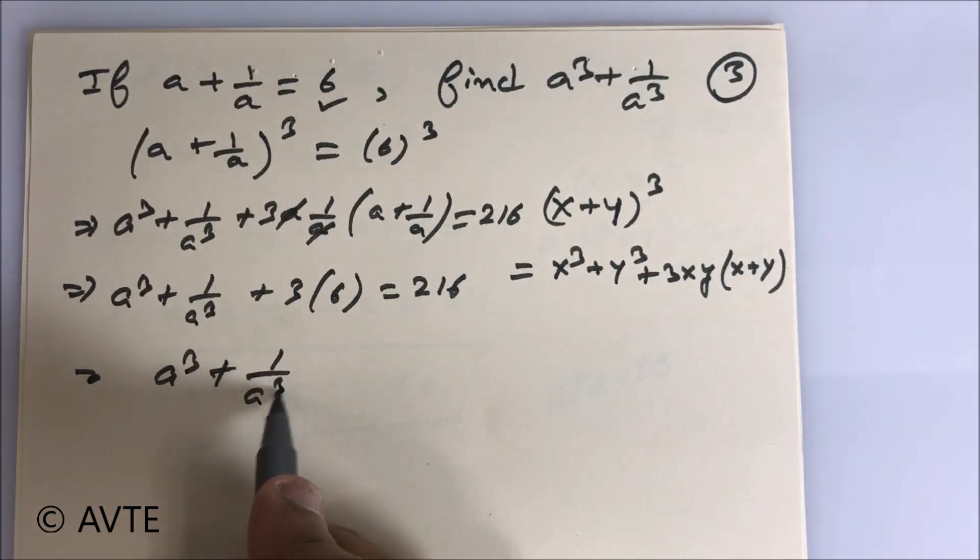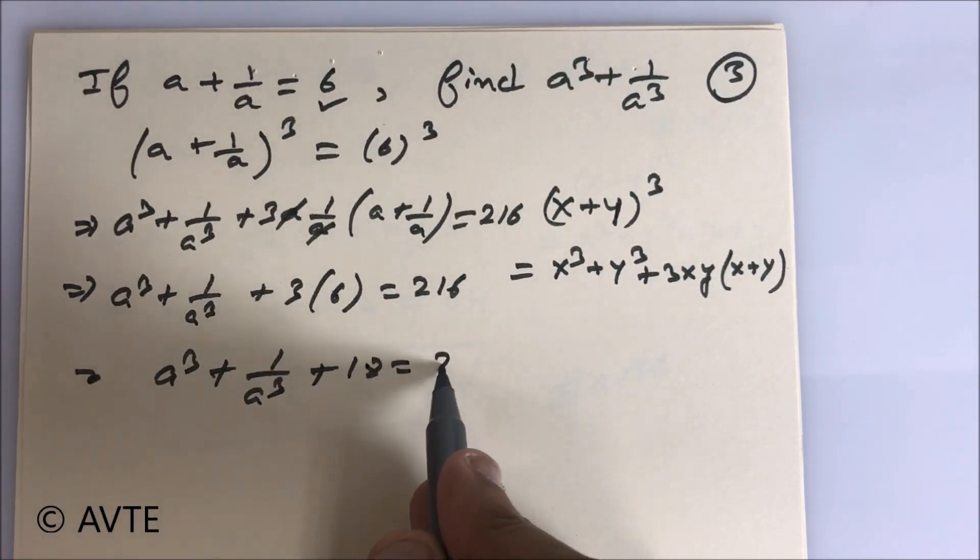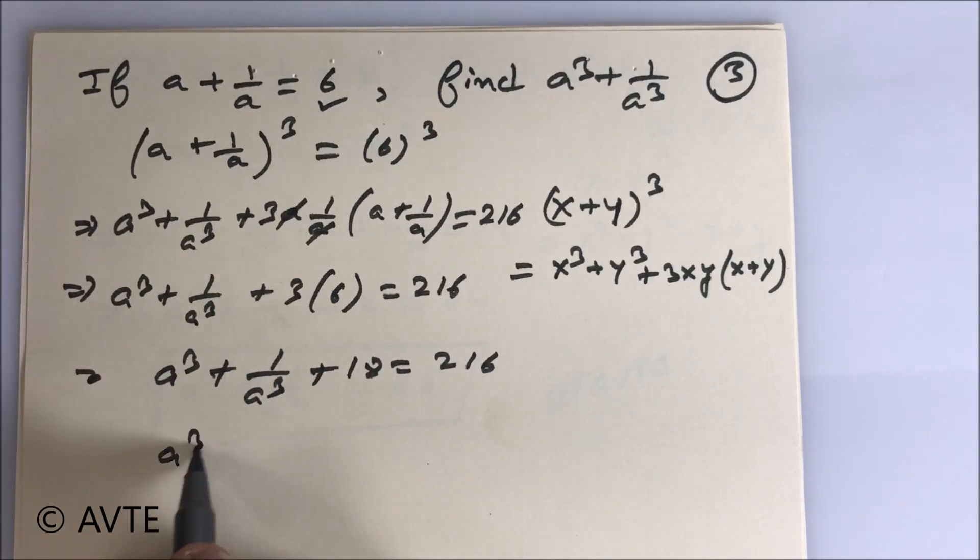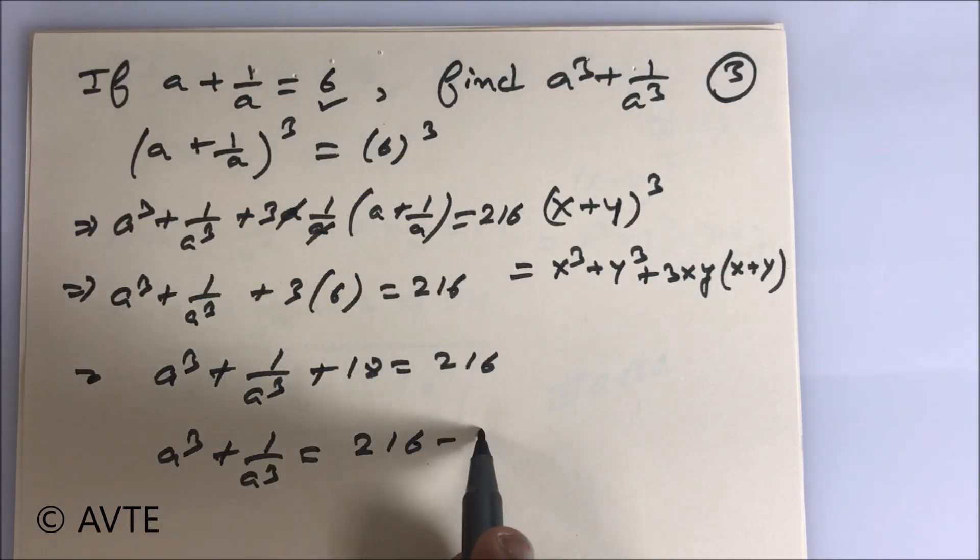So a³ plus 1/a³ plus 18 is equal to 216, and a³ plus 1/a³ equals 216 minus 18.